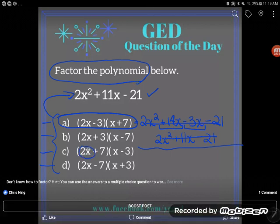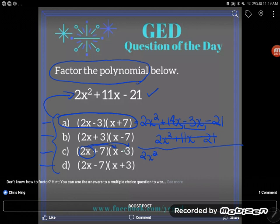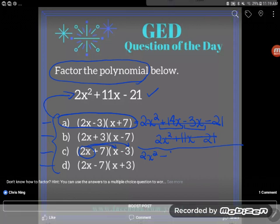So again I'll start with my first term 2x and I'll multiply it by every term in the second parentheses. 2x times x is 2x squared. 2x times negative 3 is negative 6x.